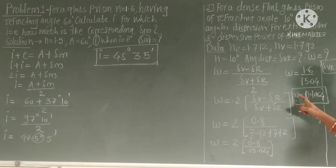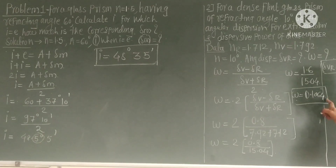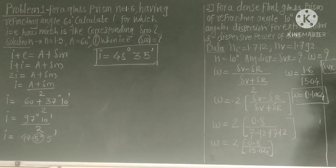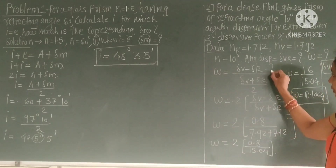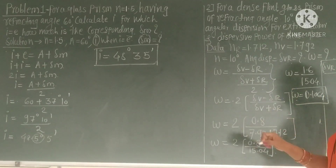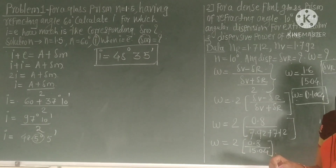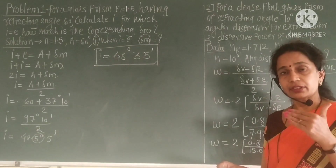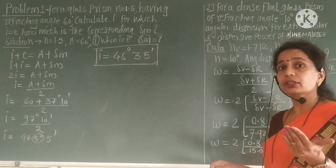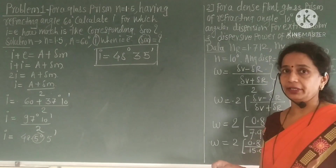So omega equals 0.1064 and angular dispersion δvr equals 0.80 degrees. Omega has no unit because it is a ratio of the same physical quantity. This ratio depends only on the refractive index, meaning it is a property of the material of the prism.